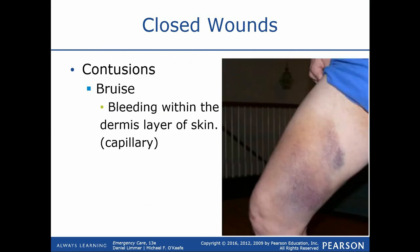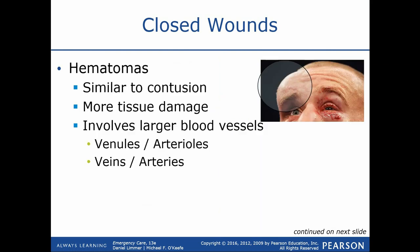Here's an example of a bruise, also known as a contusion — a closed injury with rupture of the capillary network within the dermis layers of the skin. Here we have a hematoma where we see the swelling actually pushing up or displacing the surface of the skin, typically involving arterioles or venules within the subcutaneous layers of skin or even beneath that.